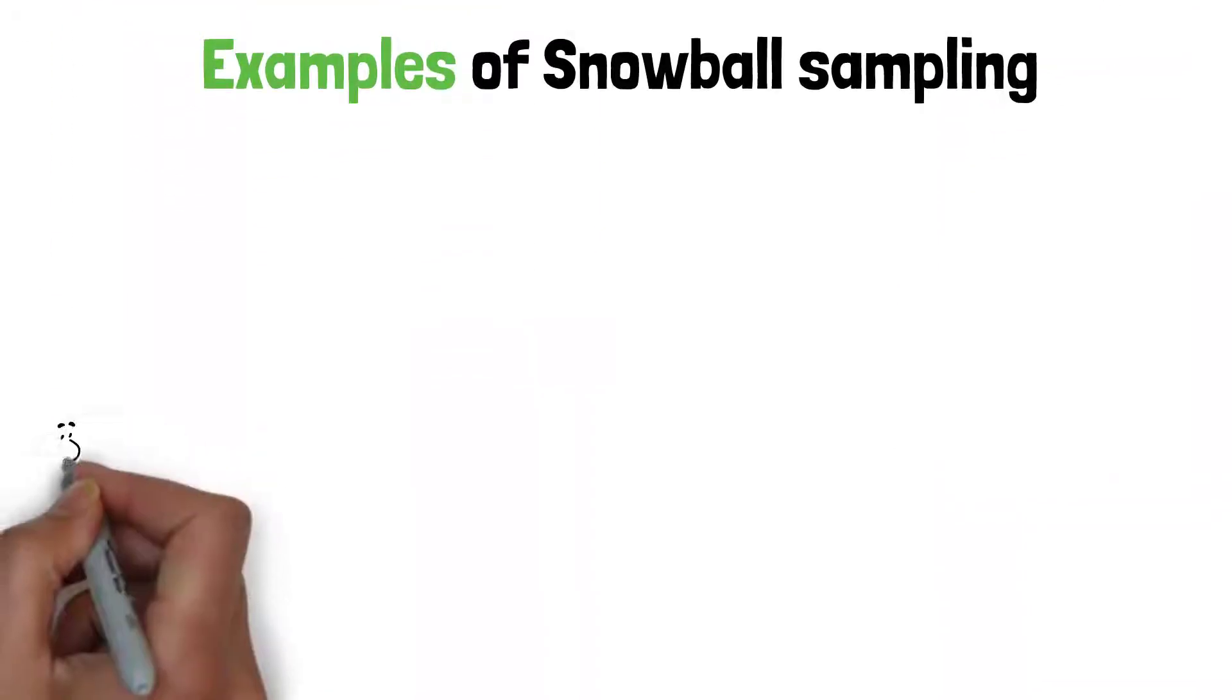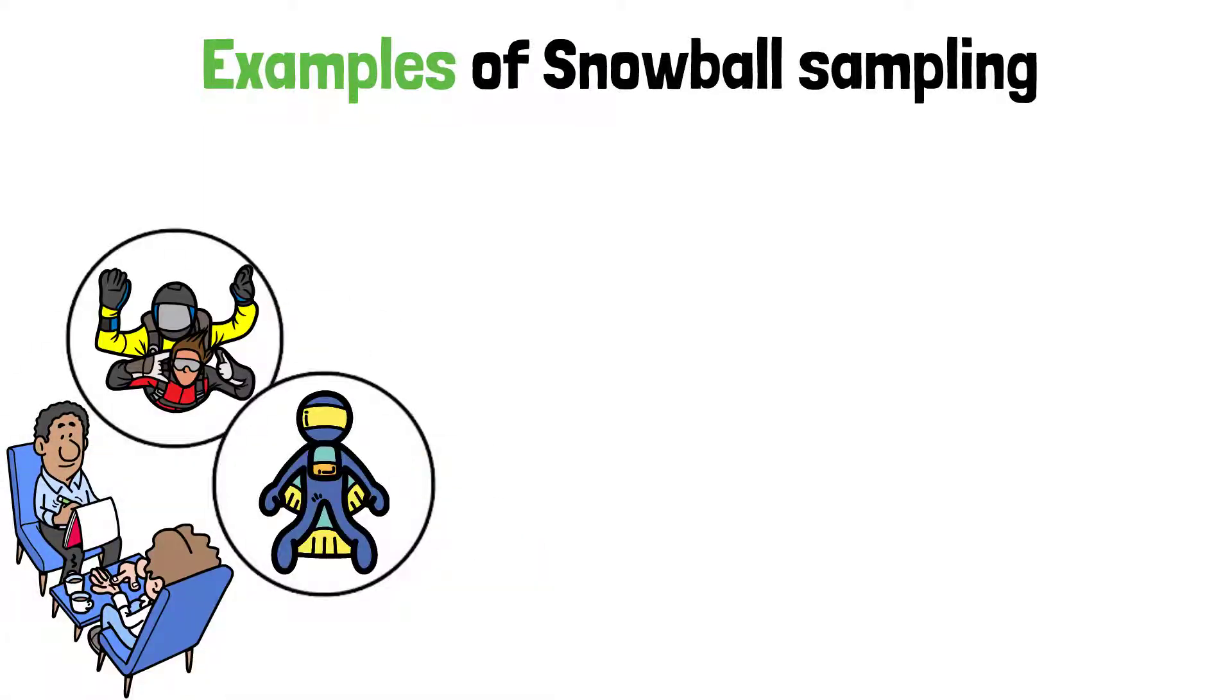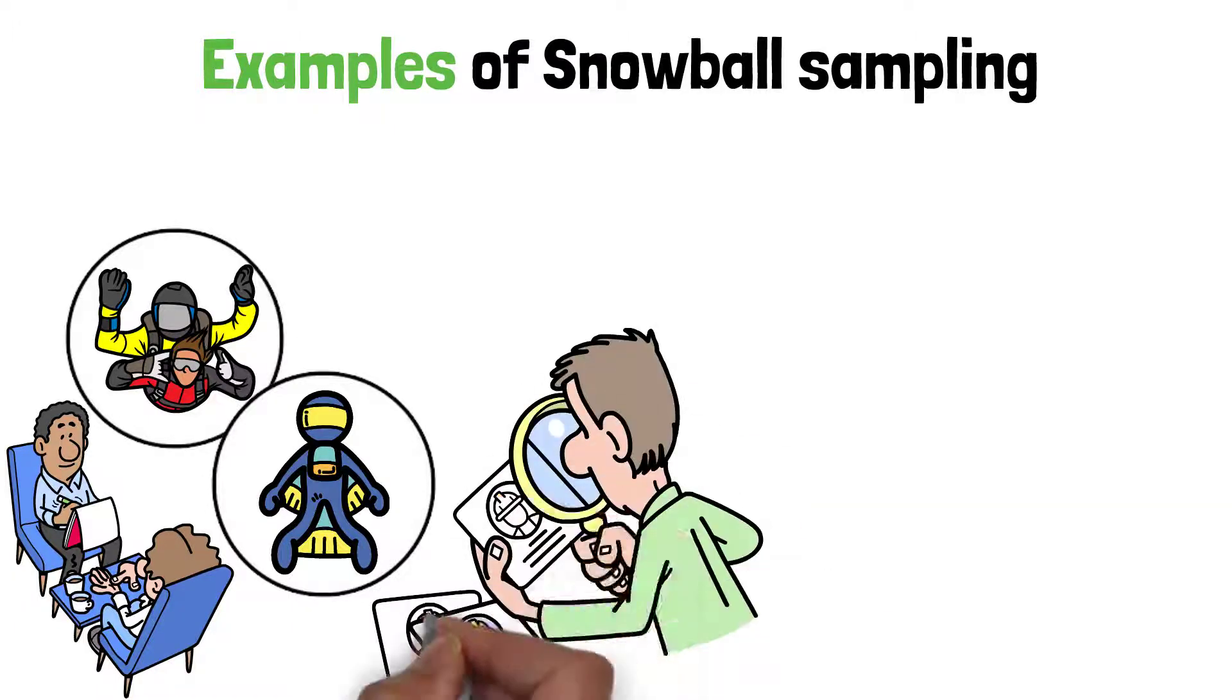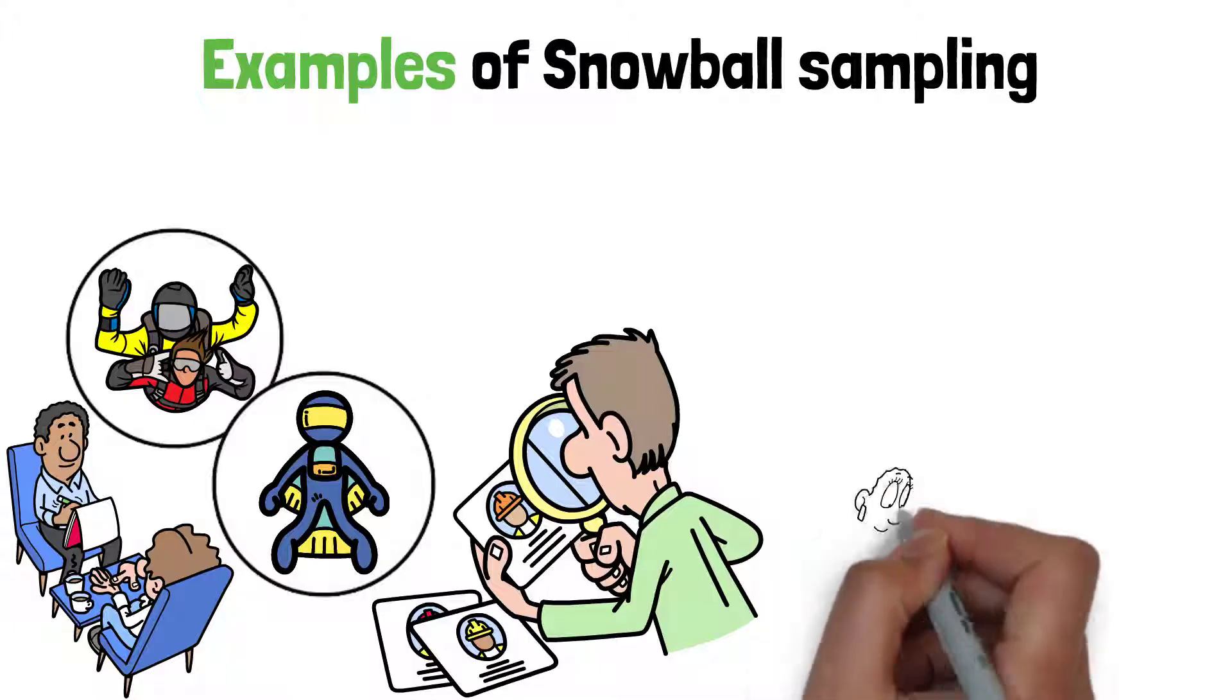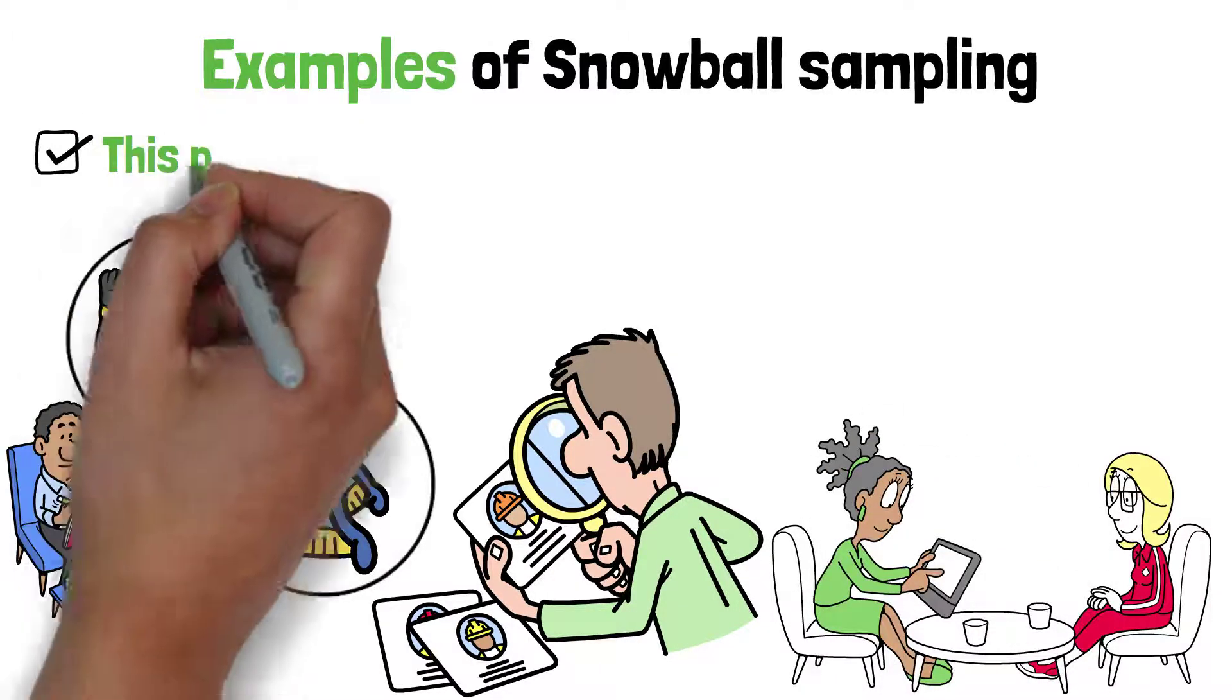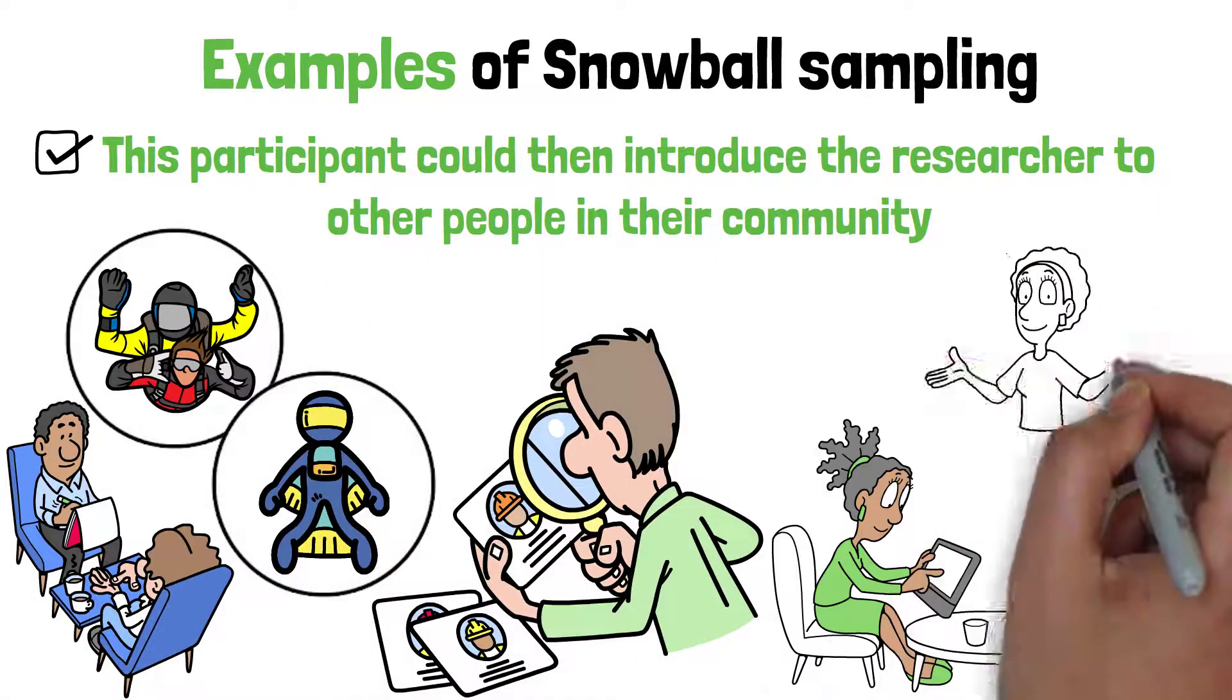Now let's look at some examples. Imagine a researcher studying individuals who engage in extreme sports, like skydiving or base jumping. Because these people might not be easy to find through advertisements or public recruitment, the researcher could begin by interviewing one extreme sports athlete. This participant could then introduce the researcher to other people in their community, allowing the sample to grow.